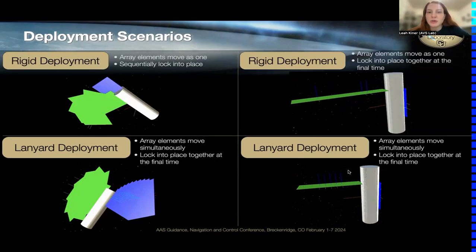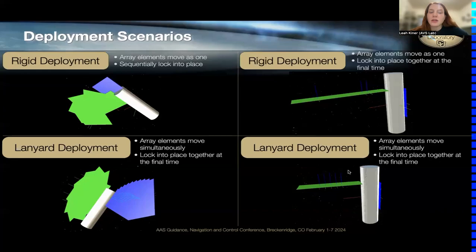Without going into the full mathematical profiling details covered in previous work: for the rigid cases, we apply a bang-bang acceleration profile with a coast period of zero acceleration between the accelerations, applying that profile for each array element that locks into place. In the lanyard cases, all elements are in a coast period throughout the main unfurlment — we only apply that bang-bang acceleration at the very start and the very end of the unfurlment.